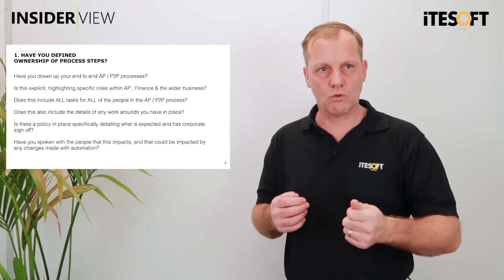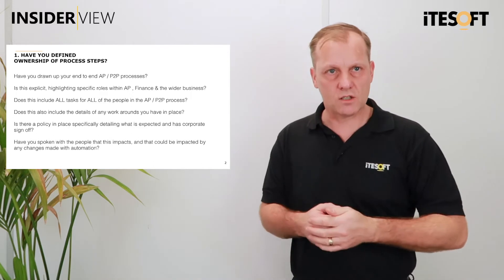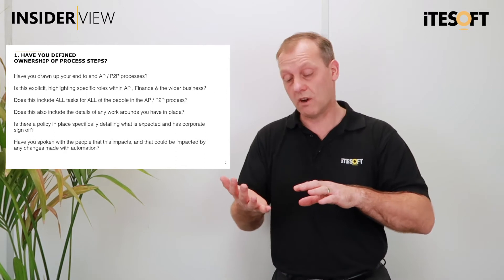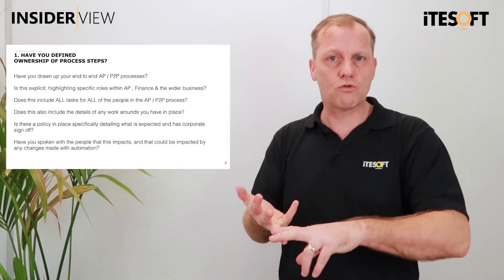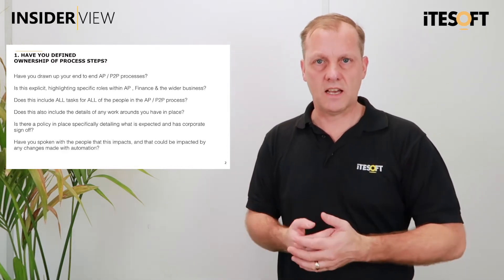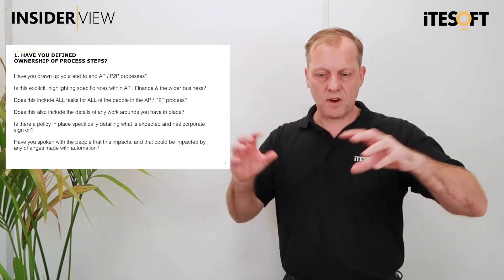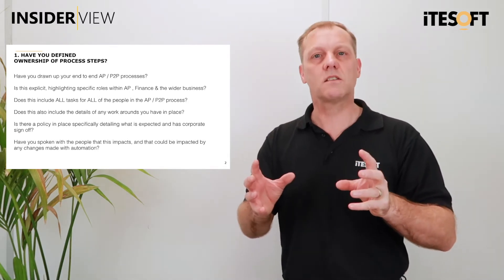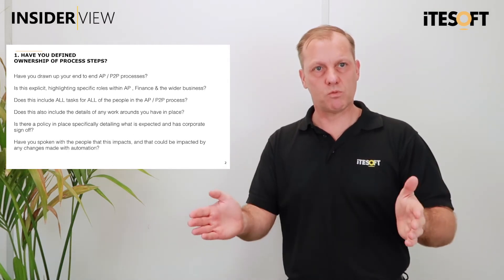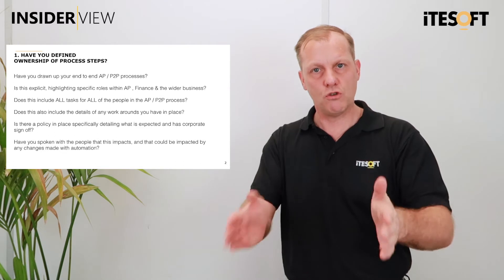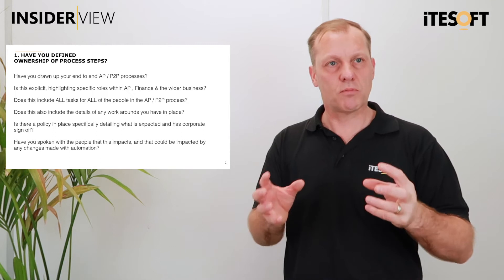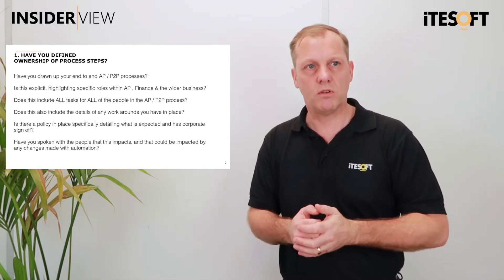Highlighting specific roles within the AP function, within the finance function, and more importantly out into the wider part of the business — so that's going to be people like the approvers, the goods receivers, who else needs to get involved, like procurement. Because it's very easy to become insular in understanding just what happens within AP and the problems within there. But the problems are usually caused outside of AP, and AP are having to manage these processes and workarounds that are being put in place.